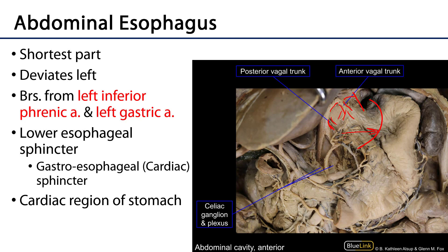This is the lower esophageal sphincter. It is supplied by branches from the left inferior phrenic artery, as well as the left gastric artery, which is a branch of the celiac trunk — which we'll discuss in much greater detail in the GI sessions.